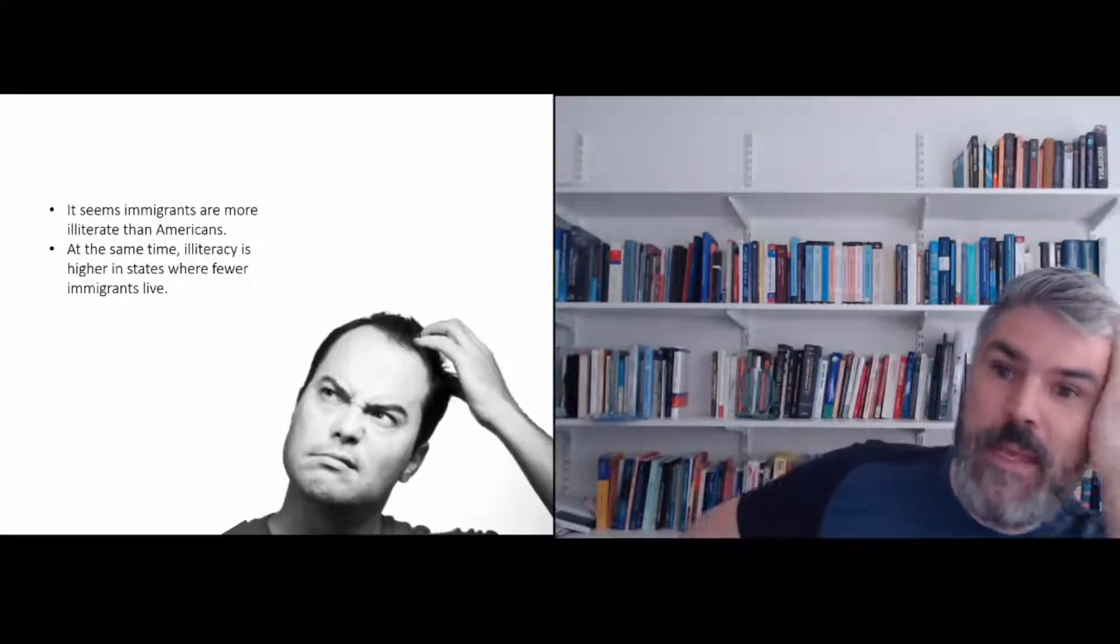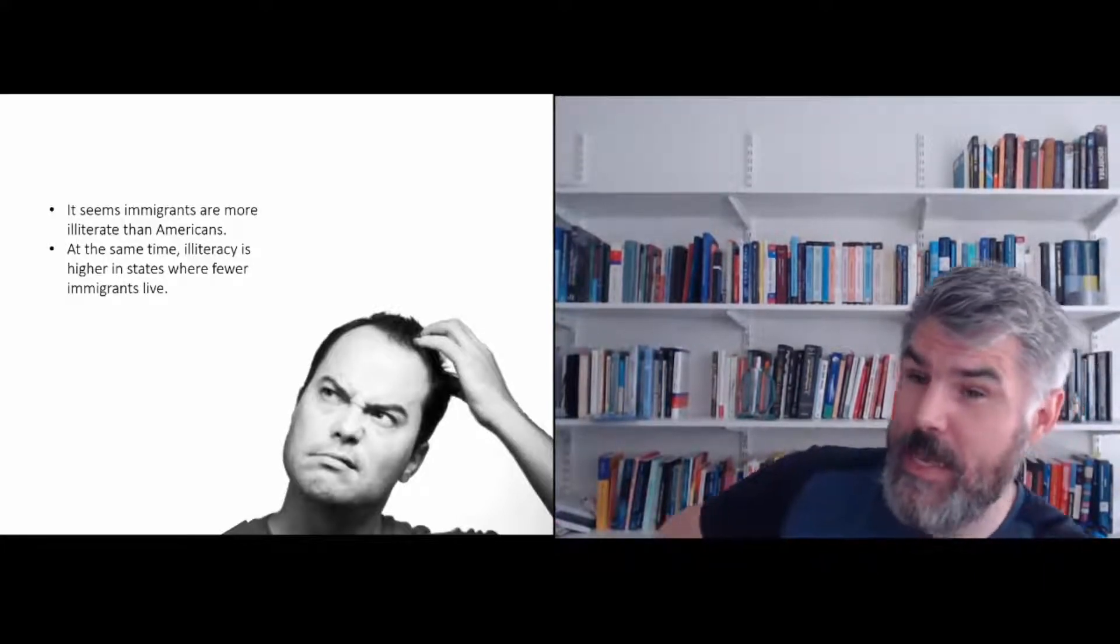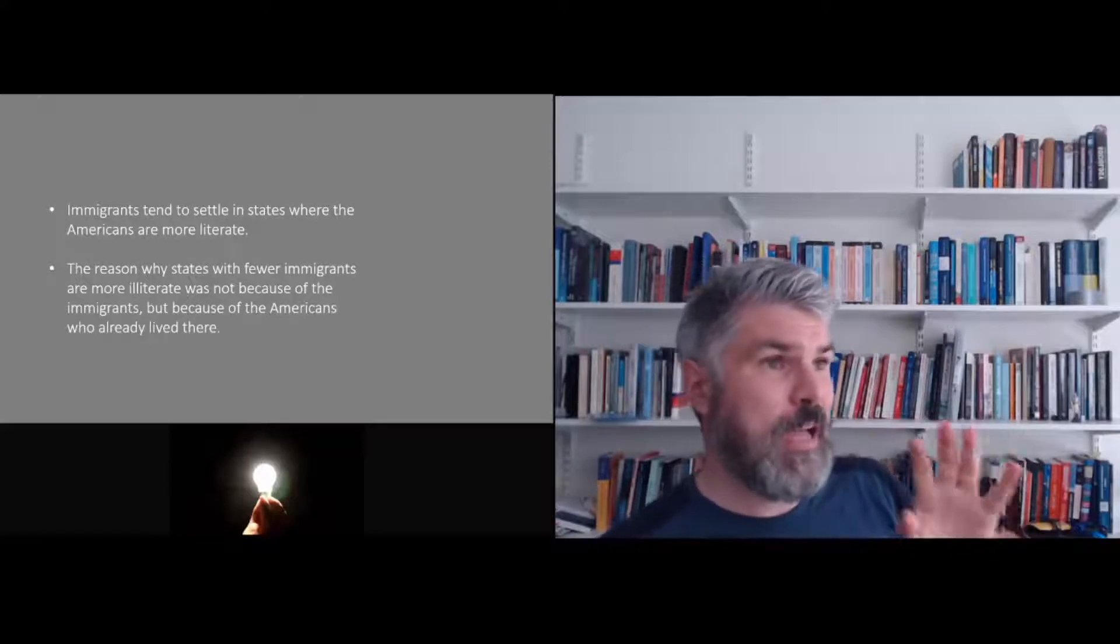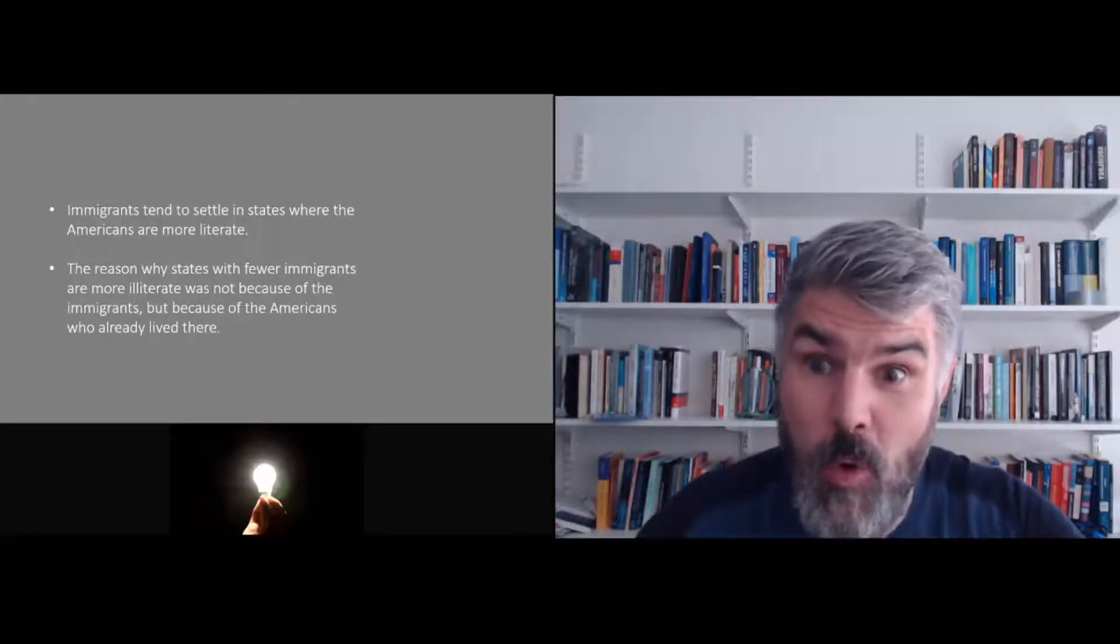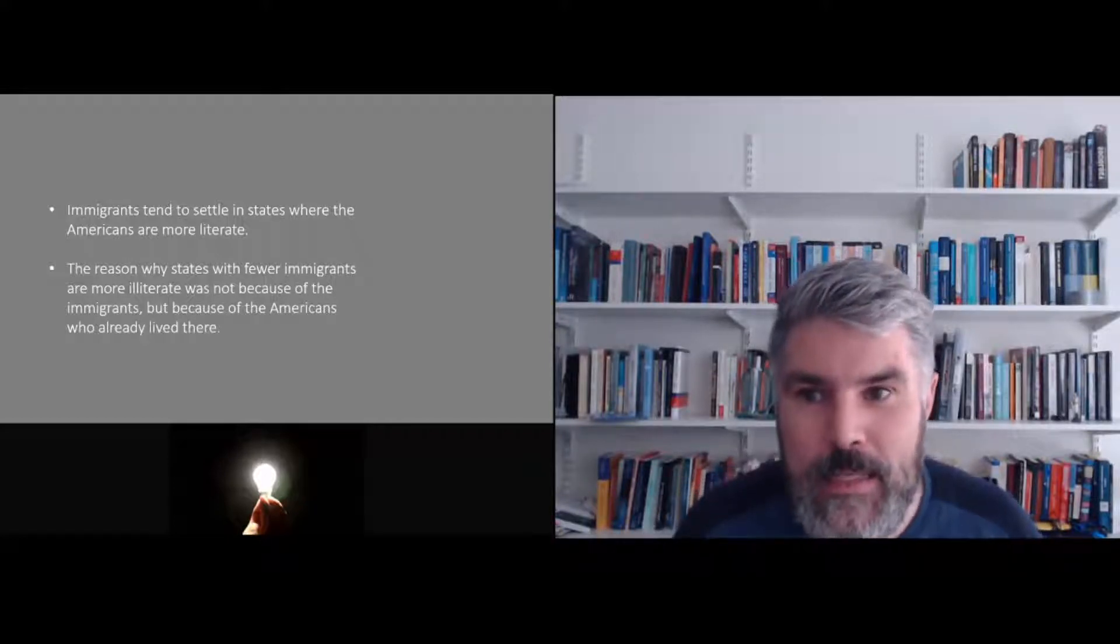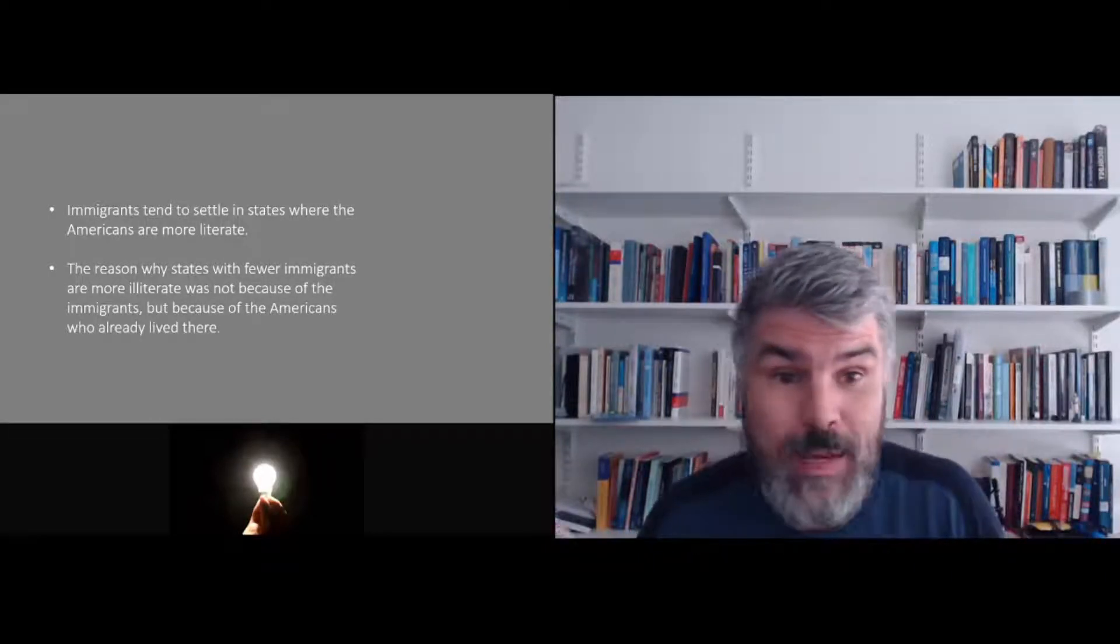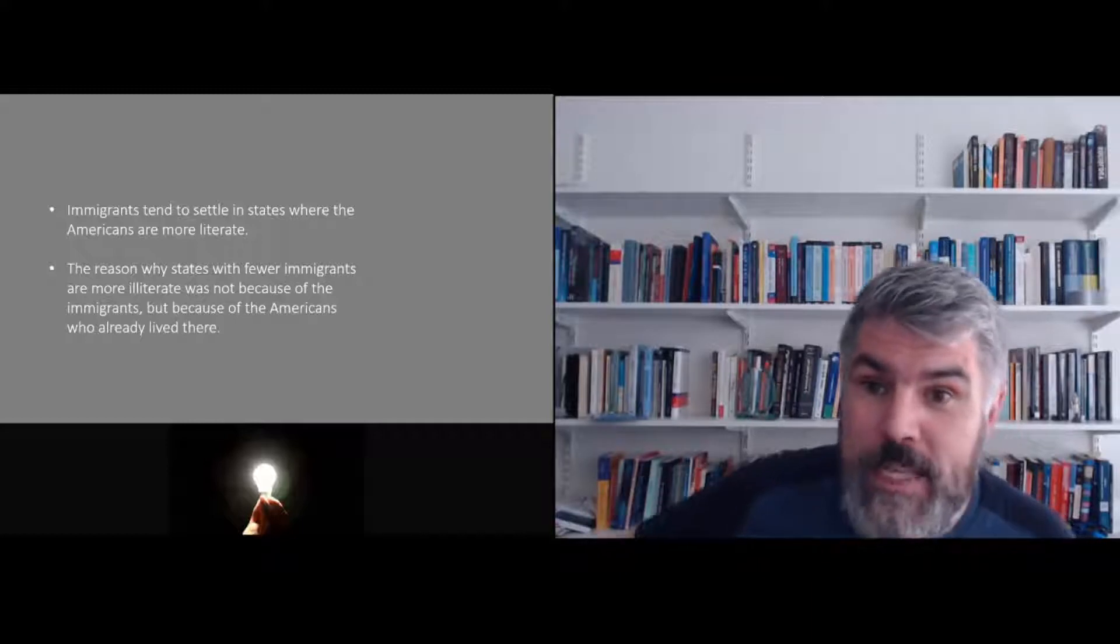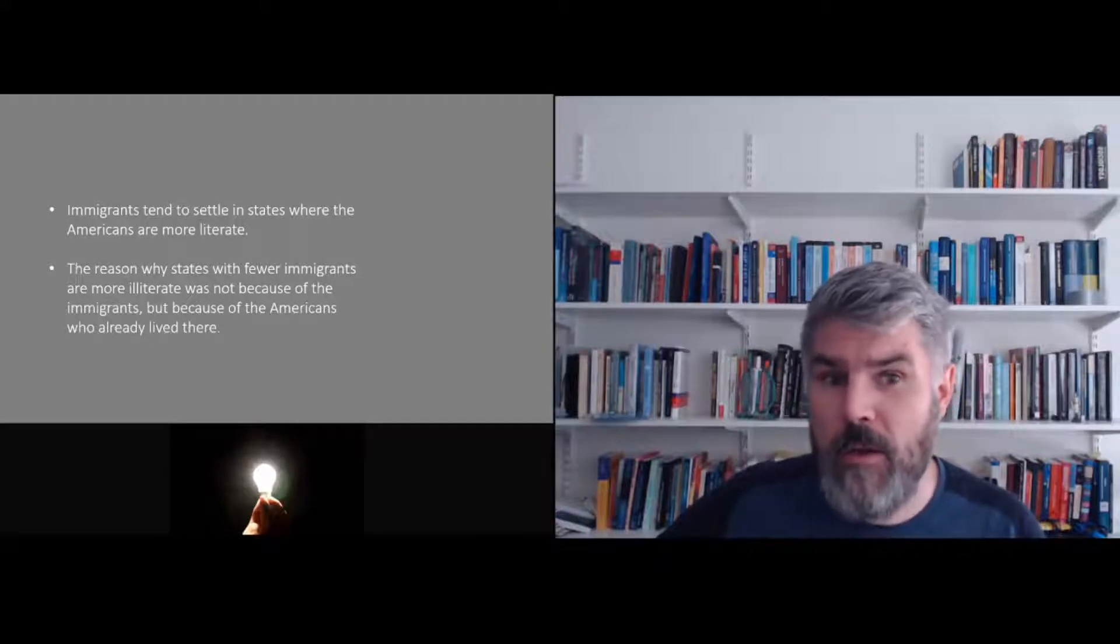That's really odd. So what is going on? So it seems that immigrants are more illiterate than Americans. At the same time, illiteracy is higher in states where fewer immigrants live. So it's not because immigrants come to a state and those immigrants can read more. It actually works in a slightly different way. So immigrants tend to settle in states where Americans were more literate to begin with. So the reason why states with fewer immigrants are more illiterate was not because of immigrants, but because of the Americans who already lived there.